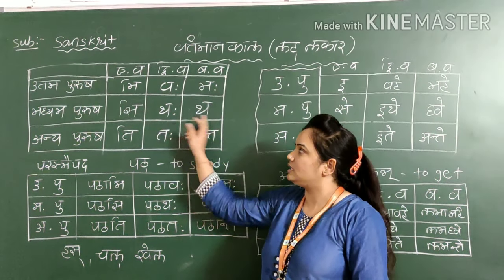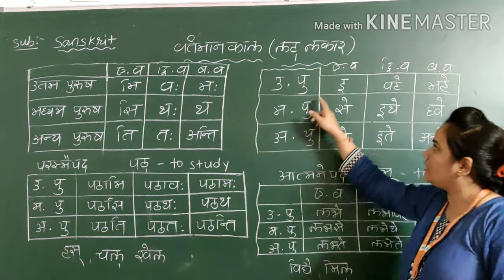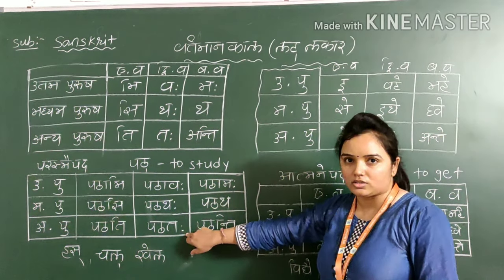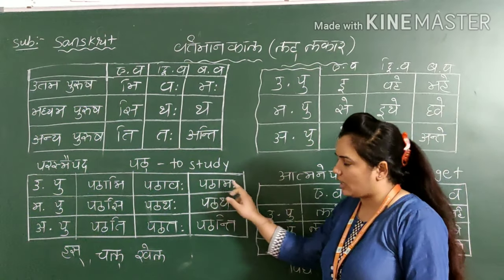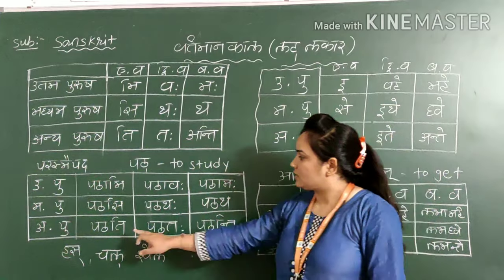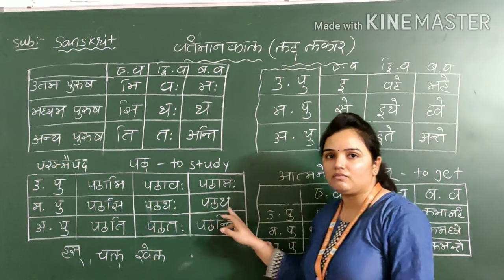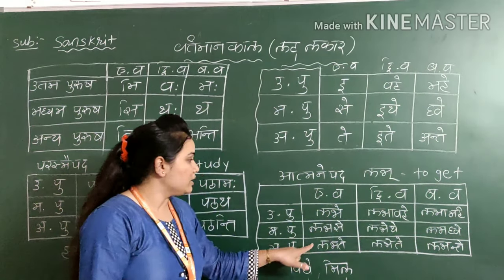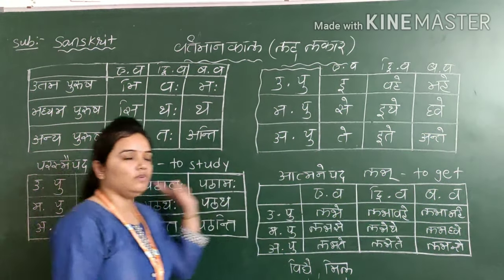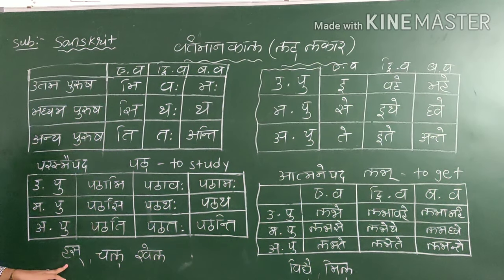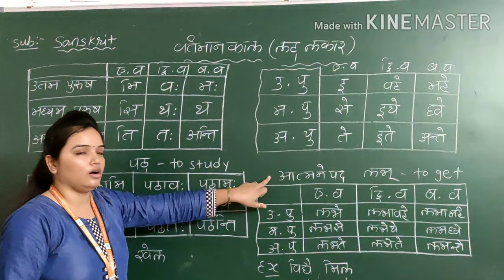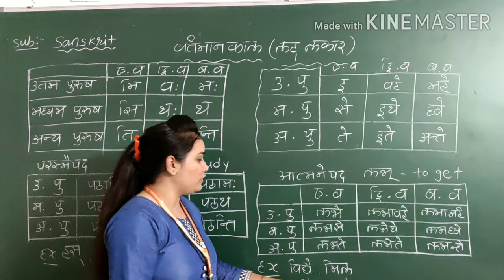Here we have seen: mi, vaha, maha, si, thaha, thaha, ti, thaha, anti. And here we have seen: e, vahe, mahe, se, ithe, dwe, te, ithe, ante. Same, we have to frame it in the words also. Pathami, pathavaha, pathamaha, pathasi, pathataha, pathataha, pathati, pathataha, pathanti. Same, we have to add also in Atmanepad. I have written the words hasa, chala, khela — these are examples. And here also I have written the examples of Atmanepad.